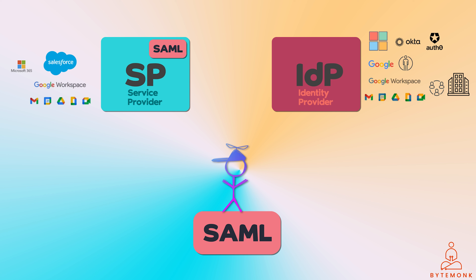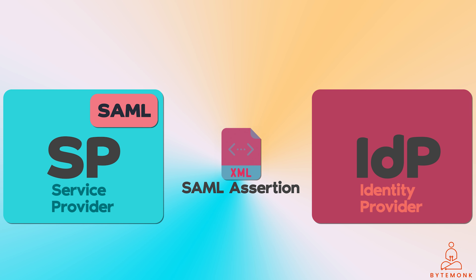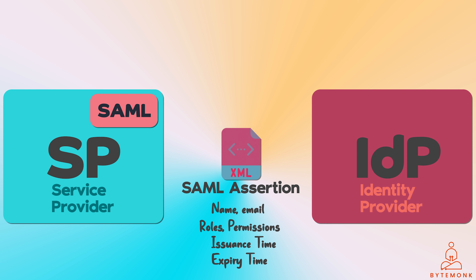A SAML assertion is an XML document exchanged between an identity provider and a service provider to convey information about a user's identity and authorization status. SAML assertions are used to implement single sign-on. They contain a variety of information including the user's identity such as name and email address, the user's authorization level such as roles or permissions, the time the assertion was issued, and the time the assertion expires.